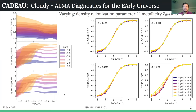On the other hand, on the right panel, you see a much clearer trend for the density and the oxygen-3-52 micron to oxygen-3-88 micron ratio. Over a wide range of different metallicities and ionization parameters, we find a clear correlation between them. So this ratio should be a good proxy for the density.